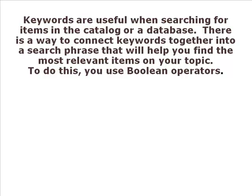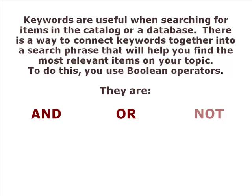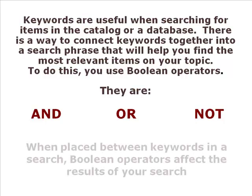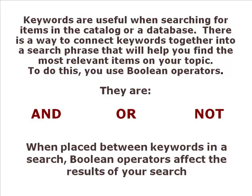Keywords are useful when searching for items in the catalog or a database. There is a way to connect keywords together into a search phrase that will help you find the most relevant items on your topic. To do this, you use Boolean operators. They are AND, OR, and AND NOT. When placed between keywords in a search, Boolean operators affect the results of your search.